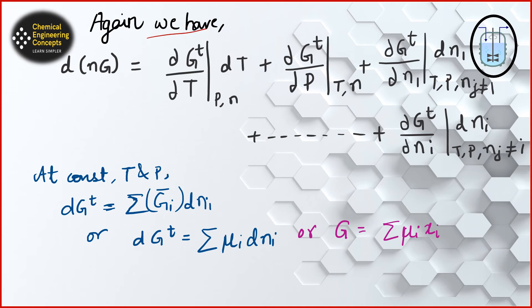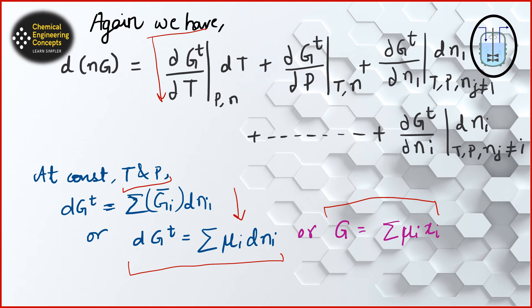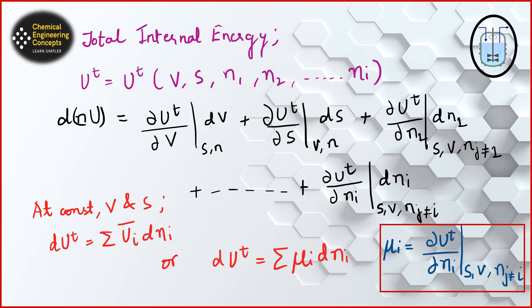If we rewrite the equation at constant temperature and pressure, we can represent Gibbs free energy in terms of chemical potential in several forms. These are the different forms in which we can represent Gibbs free energy in terms of chemical potential, and chemical potential in terms of Gibbs free energy. Importantly, we can also define chemical potential in terms of internal energy, enthalpy, and Helmholtz free energy, which are the most fundamental thermodynamic properties.